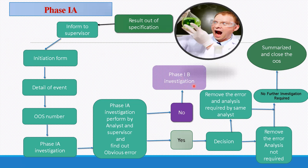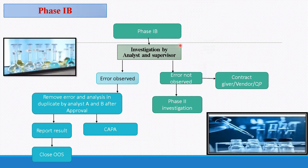Phase 1B investigation is conducted by the analyst and supervisor. If an error is observed, remove the error and perform analysis in duplicate by Analyst A and B after approval, then report the result and close the OOS. Corrective and preventive action (CAPA) should be taken here. If no error is observed, proceed to Phase 2 investigation and inform your contract giver, vendor, or QP.